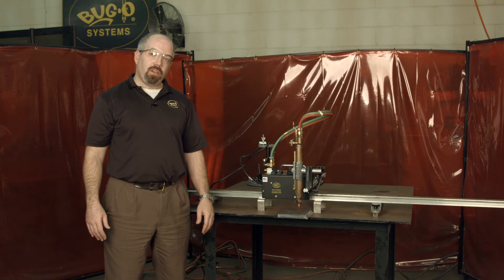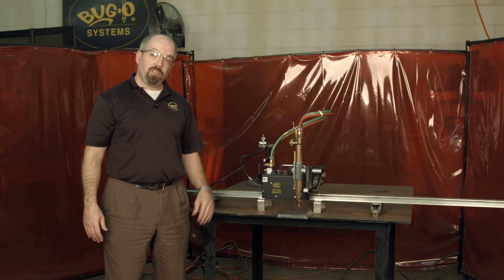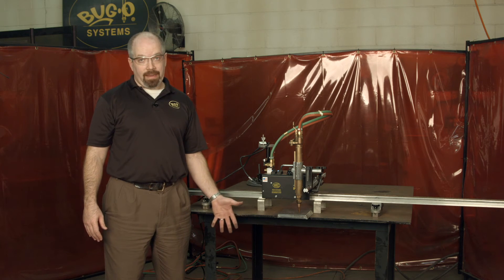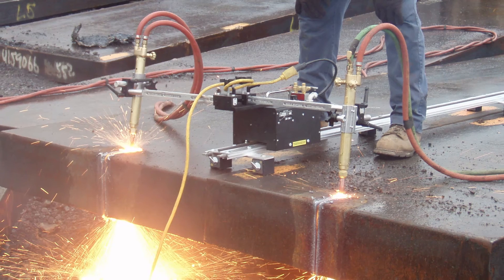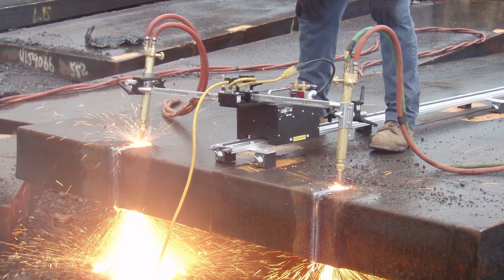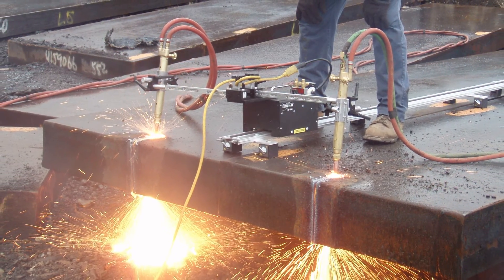We went through the example of the oxy fuel cut today, but the Gopher can also be used for plasma or welding or for back gouging if necessary. The machine can also be configured to run two torches for simultaneous cuts or two different weld beads.